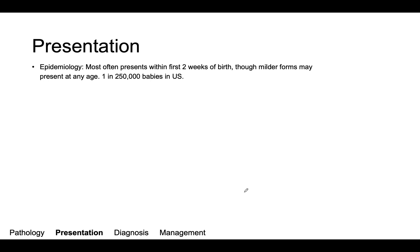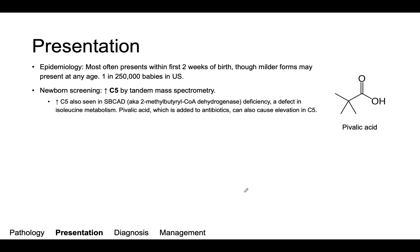Now the epidemiology: most patients with isovaleric acidemia present in the first two weeks of life, though they can present at any age. The incidence is about 1 in 250,000. Most often, isovaleric acidemia is detected by increased C5 levels on mass spec, which can also be seen in 2-methylbutyryl-CoA dehydrogenase deficiency and in patients taking antibiotics containing pivalic acid, a 5-carbon compound.